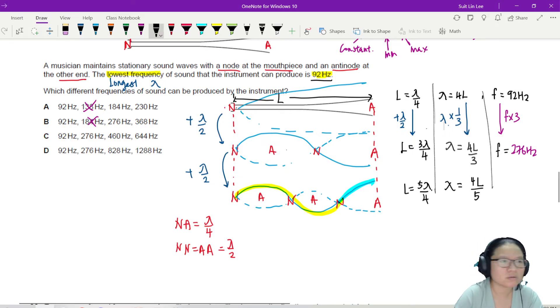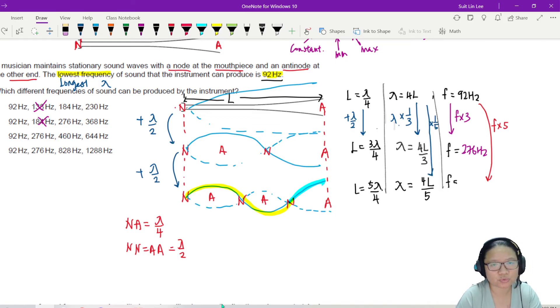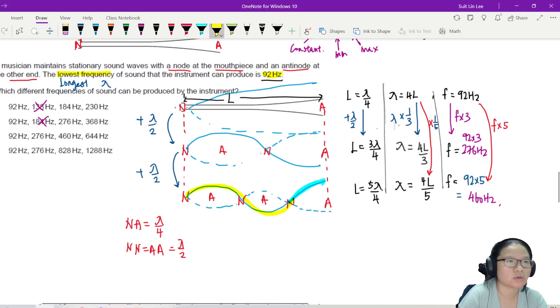Well, from here to here, the lambda times 1 over 5. So what happens to the frequency? The frequency will times 5. So for this one, the frequency from here to here would times 5. Let me change color for you. From here to here, the lambda times 1 over 5. So this one becomes 92 times 5. So this 276 is 92 times 3. This is 92 times 5, which will be 460.